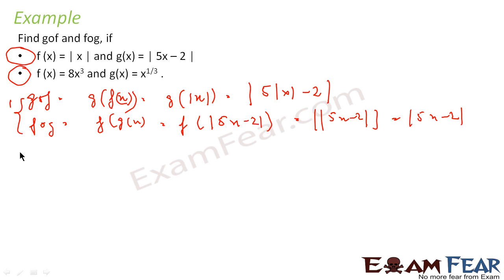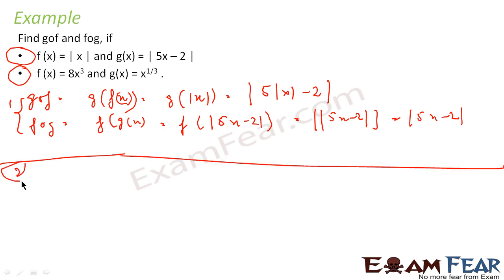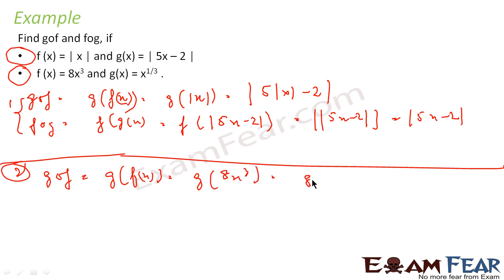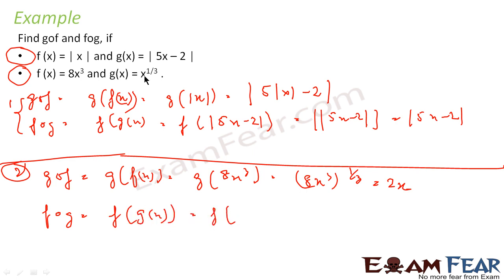Now solving the second case. Here f(x)=8x³ and g(x)=x^(1/3). To find g∘f: g(f(x))=g(8x³)=(8x³)^(1/3)=2x. Similarly, for f∘g: f(g(x))=f(x^(1/3))=8·(x^(1/3))³=8x. So g∘f=2x and f∘g=8x.